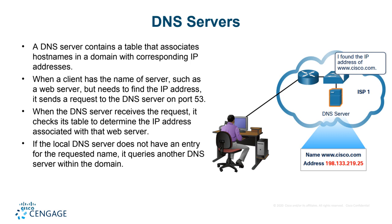DNS servers contain tables that associate host names in a domain with corresponding IP addresses — for example, Microsoft.com maps to its IP address, hp.com maps to its IP address. When a client has the name of a server, such as a web server, but needs to find the IP address, it sends a request to the DNS server. The port number for DNS is 53.